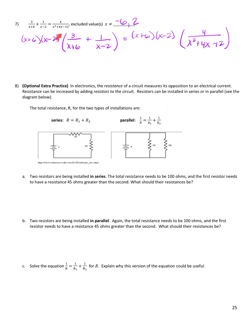On the left, distributing the common denominator to the first fraction — the x plus 6's cancel, leaving 3 times x minus 2. Distributing to the next term, the x minus 2's cancel, leaving x plus 6 times 1, which is just x plus 6. On the right-hand side everything cancels, because x plus 6 times x minus 2 equals x squared plus 4x minus 12, so we just have 4. Distributing and solving: 3x minus 6 plus x plus 6 equals 4. The minus 6 and plus 6 cancel, and 3x plus x is 4x equals 4, so x equals 1, which is not in my list of restricted values. So that's the solution.